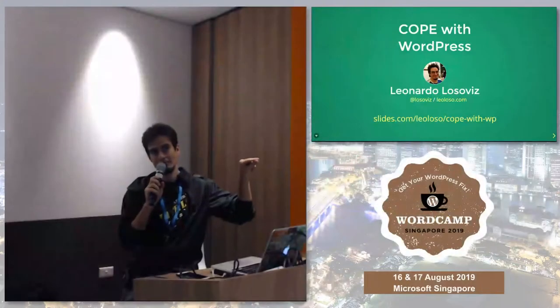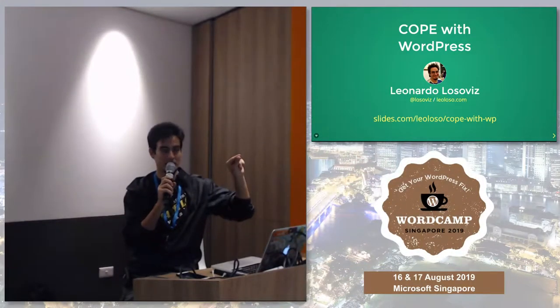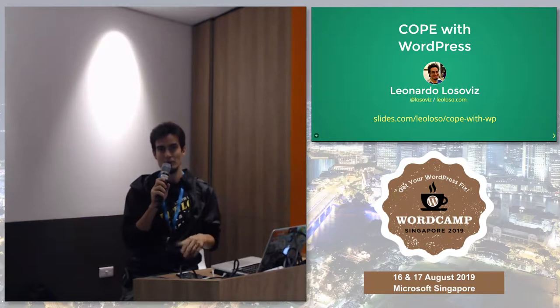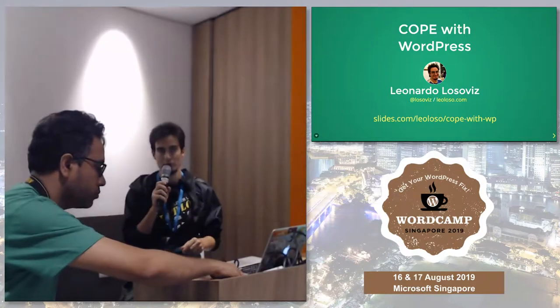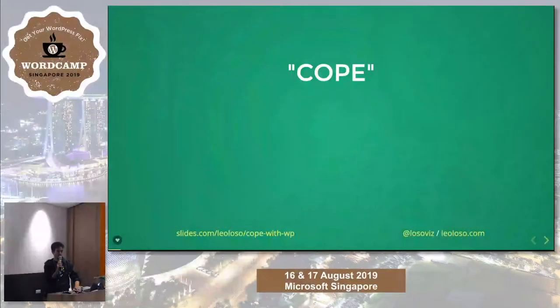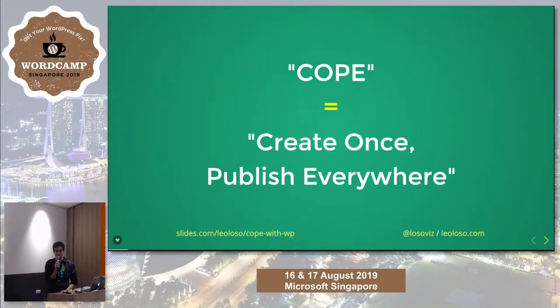The URL is Cope with the hyphen WP. I'd encourage you to actually load this URL because there are some links I'm not going to show here that you might want to see later on. So, COPE — what does this mean? It actually means Create Once, Publish Everywhere. It's a kind of clickbait title. I didn't invent this term, but that's what it actually means.